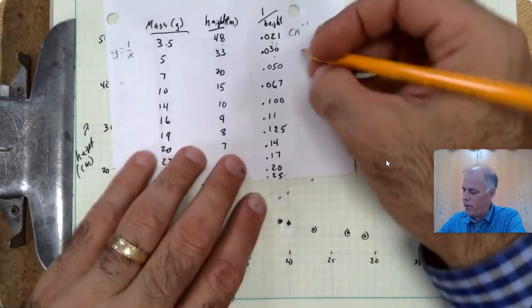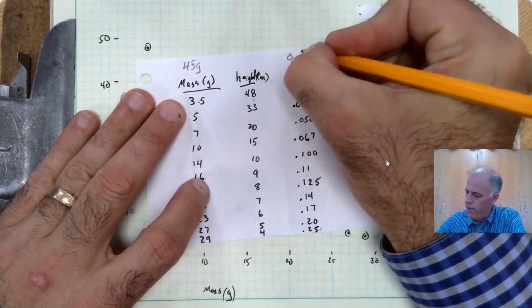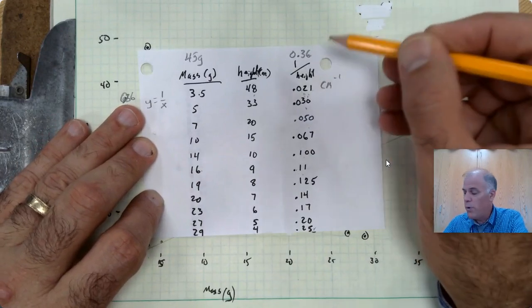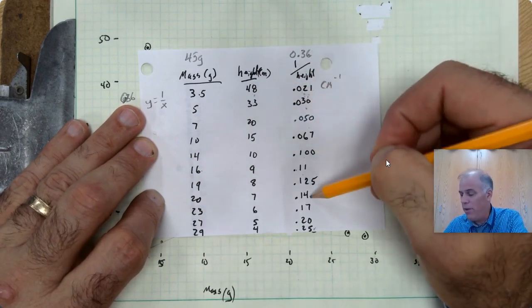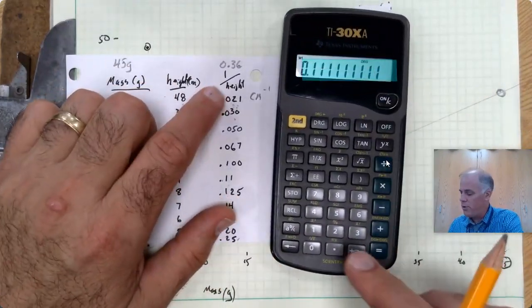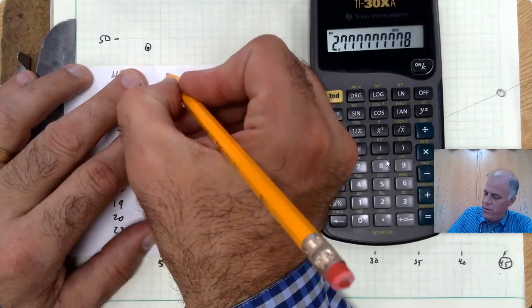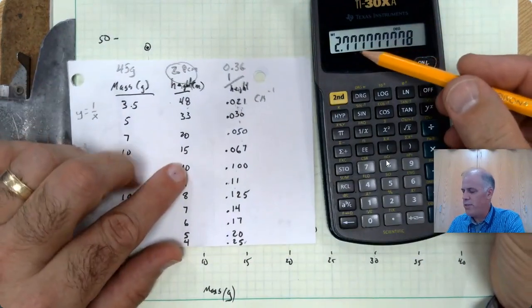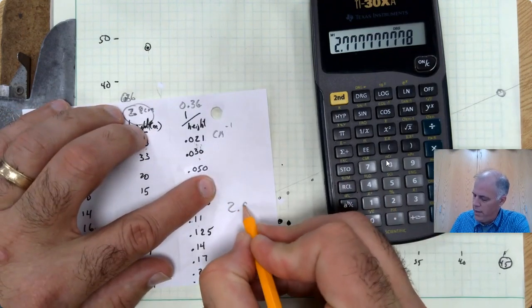Now that is just the number. So for 45 grams, we get 0.36. That is the transformed number for Walt. So if we want to get back to the actual height, we need to undo what we did to make all the numbers in this column. So all we do is we take the inverse of that number. So 0.36, and we're going to do 1 over x, and we get 2.8 centimeters. That's 2.8 centimeters.